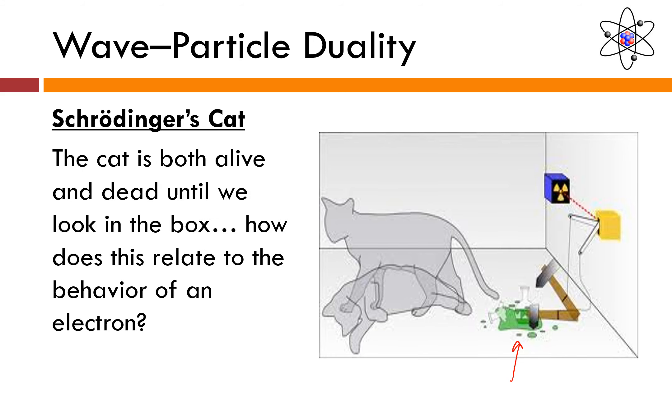So again, just to recap, you've got the cat in the box with something that could kill the cat. Until you open that box, the cat is both dead and alive. Once you open the box, it has to be one or the other. That's why looking at the electron, or it's analogous to looking at the electron, changed the way it behaved in the double slit experiment.